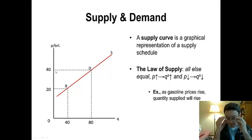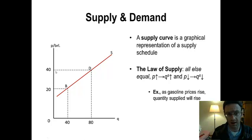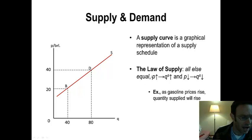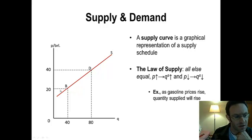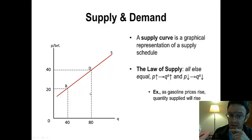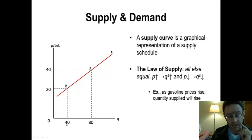The upward sloping nature of the supply curve indicates that typically — and we call this the law of supply — when price increases, quantity supplied will also increase. So if price goes from $20 to $40, we see that quantity supplied rises from 40 to 80. Conversely, if price were to fall from $40 to $20, then we can expect quantity supplied to decline from 80 to 40.